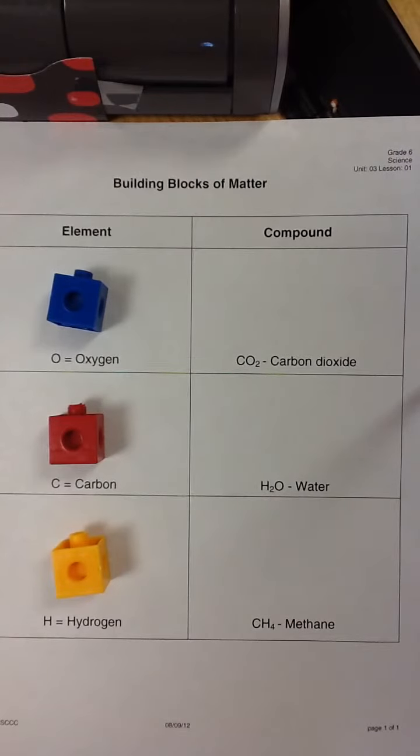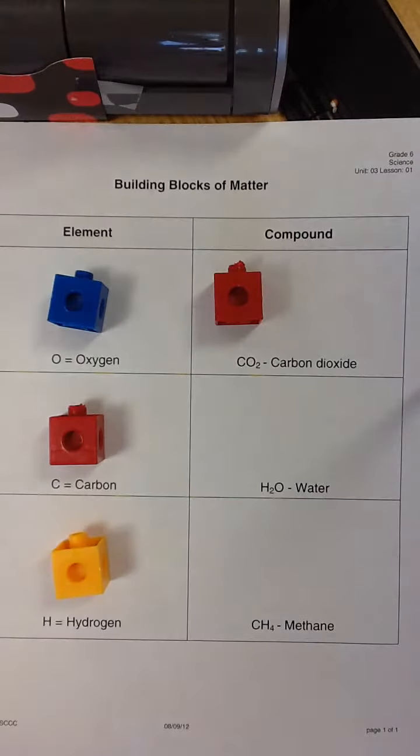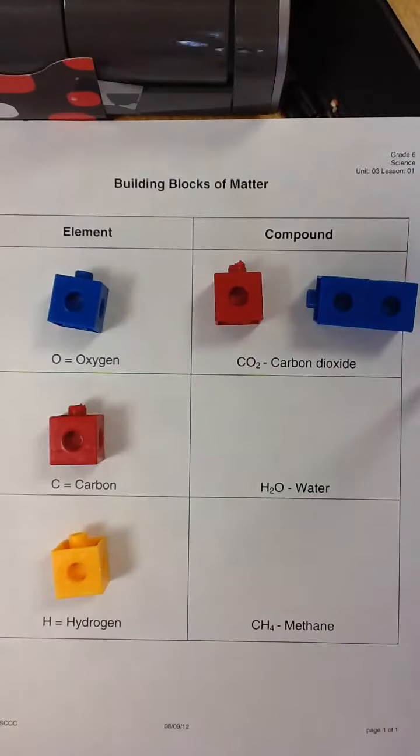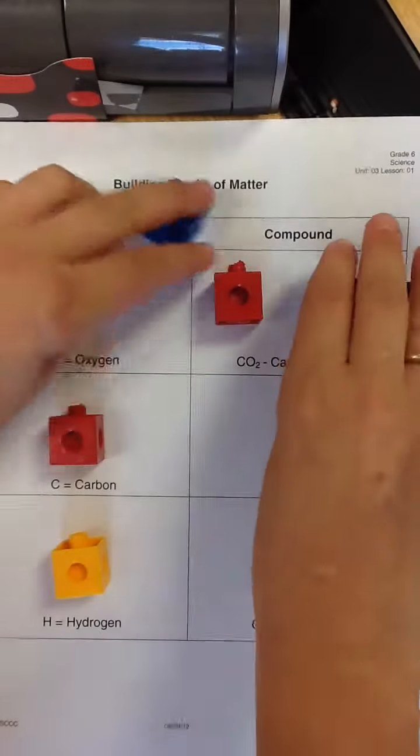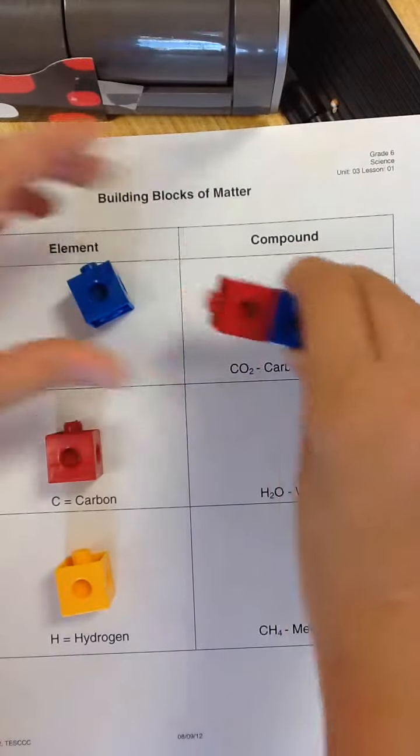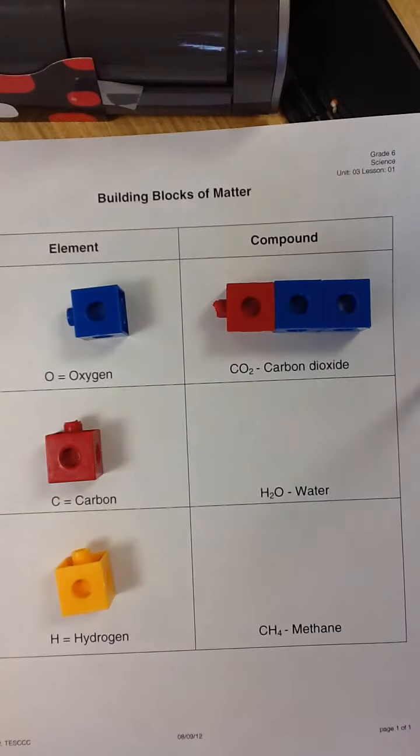All right, we're talking about how elements become compounds. For them to be a compound, it must be two different elements that are chemically combined. So for example, CO2, which is carbon dioxide, is going to be one carbon and two oxygen. Now, right now, this is a mixture because they are not chemically combined. I am going to chemically combine them in this demonstration by attaching the blocks, and now I've made a completely different substance, which is carbon dioxide, which is what we breathe out.